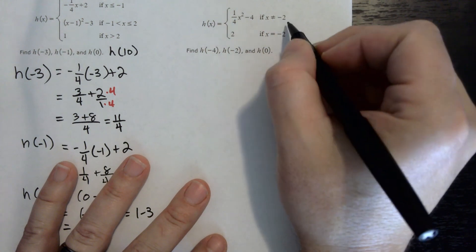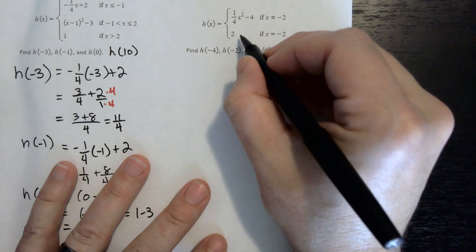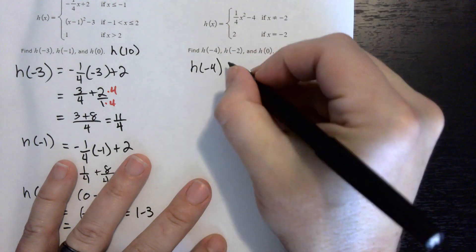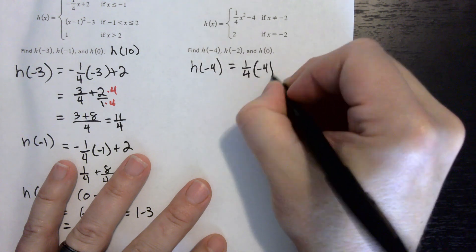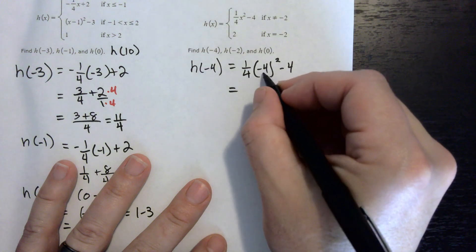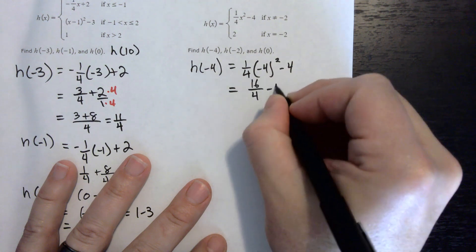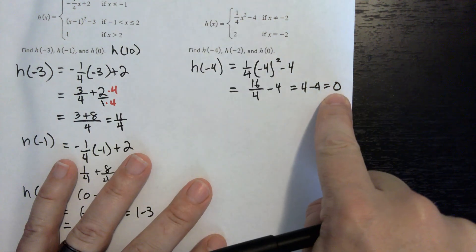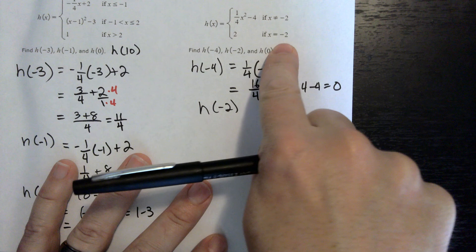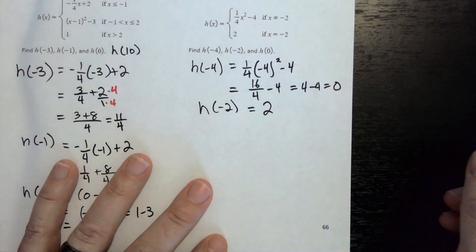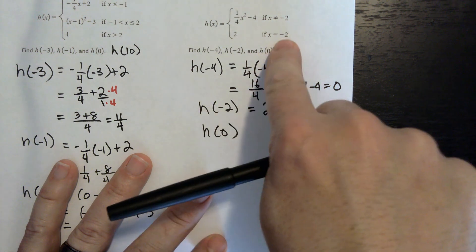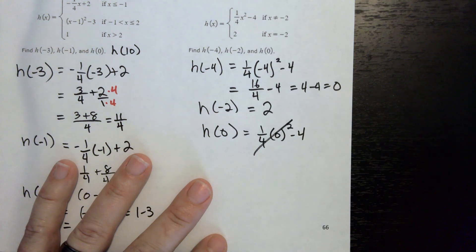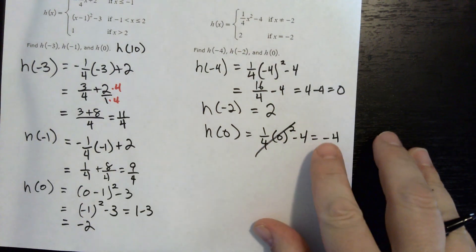For the final piecewise example: if x is not equal to negative 2, use one-quarter x squared minus 4; if x equals negative 2, use a different value. h of negative 4: not negative 2, so one-quarter times negative 4 squared minus 4 equals 16 over 4 minus 4 equals 4 minus 4 equals 0. h of negative 2: x equals negative 2, so use the specified constant value directly. h of 0: not negative 2, so one-quarter times 0 squared minus 4 equals 0 minus 4, which equals negative 4. And that concludes evaluating functions.